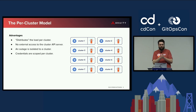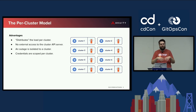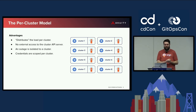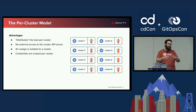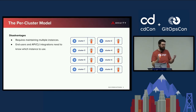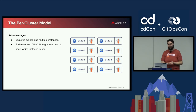With the per-cluster model, you can add a lab environment cluster and break Argo CD there without affecting end users. The credentials Argo CD uses are scoped to each cluster — it uses a service account and local cluster networking to reach the API server — so you no longer have a central store of all cluster-admin credentials waiting to be compromised.